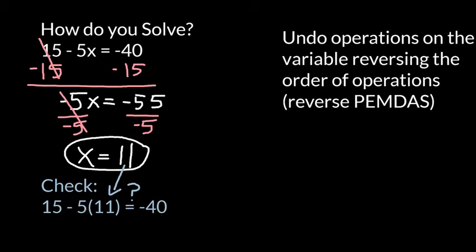15 minus 55 is indeed equal to negative 40. Therefore, I know that my answer is correct and that x equals 11 is the answer to my original equation.